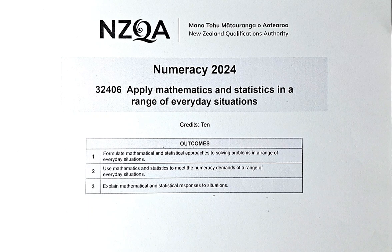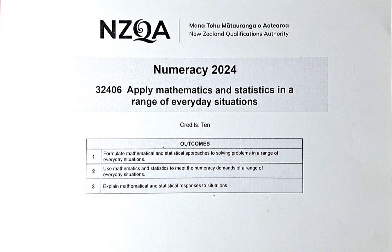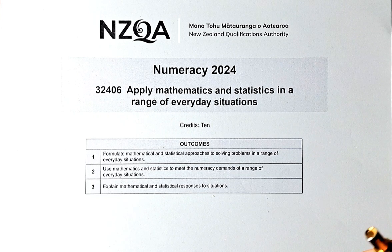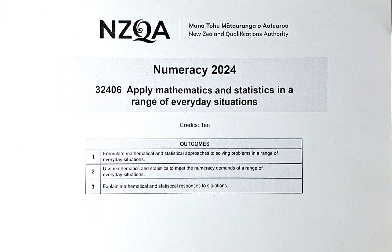It's a unit standard so it's either achieved or not achieved. If you achieve, you get 10 credits. If you're not, you have to do it again until you get your achieved criteria. So without further ado, let's do question 2A to 2C in this video.